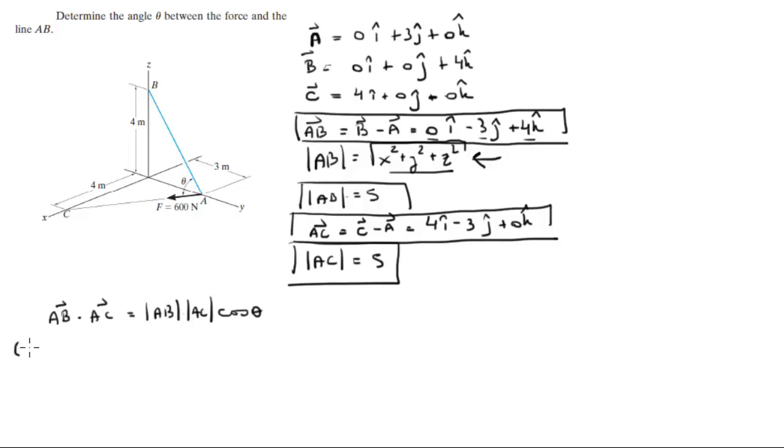So AB is 0i minus 3j plus 4k dot AC is equal to 4i minus 3j plus 0k is equal to the magnitude of AB is 5, the magnitude of AC is also 5, and times the cosine of the angle between them, which is the angle we're trying to find.